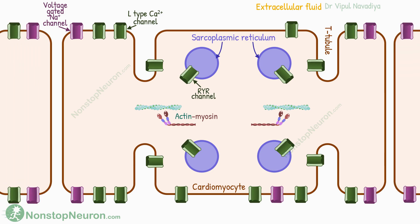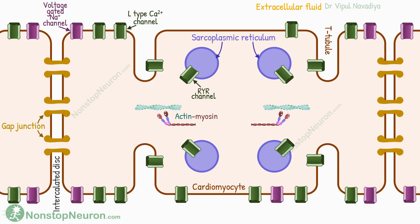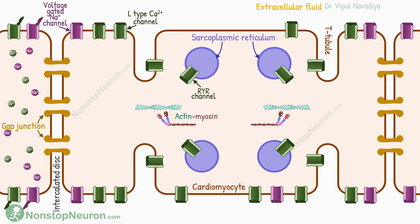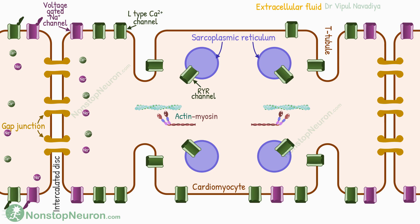Many such cells are connected side-by-side at intercalated discs. Here, a high number of gap junctions connect the cytoplasm of adjacent cells. When an adjacent cell is excited, action potential results in an influx of a large quantity of positive ions, like sodium and calcium, in that cell. Some of these ions diffuse into the next cell through gap junctions.